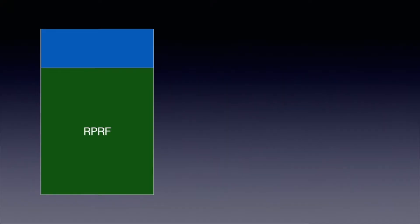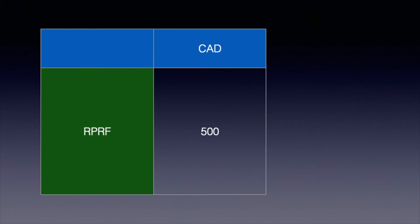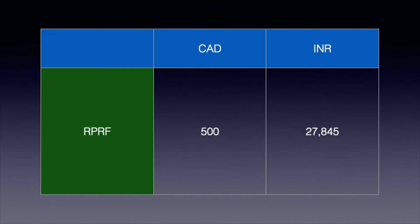Once you get your invitation to apply for PR, you need to pay the RPRF fee — the Right of Permanent Residence Fee. This fee is required once you get your invitation. The RPRF will cost you around 500 Canadian dollars, which is equivalent to approximately 27,845 Indian rupees.